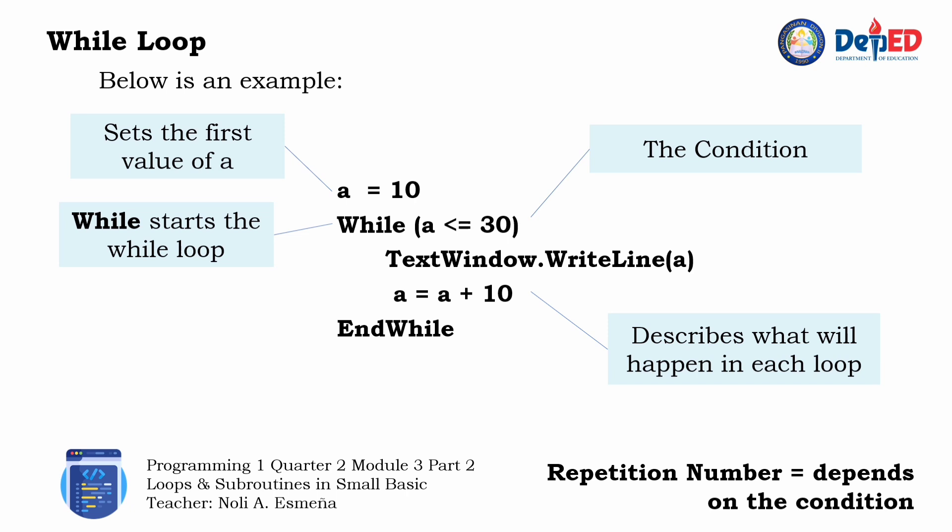If the condition is false or if the value of a is already greater than 30, then the loop will stop. The end while keyword will also be used to end the while loop.